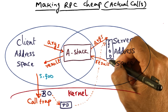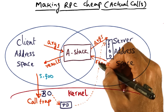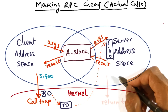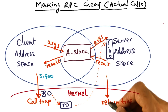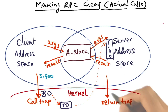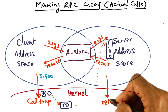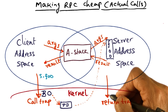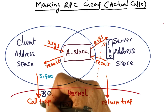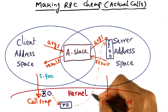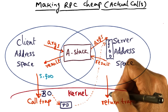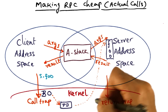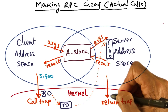Once the server stub has copied the results into the A stack, it can trap into the kernel. This is the vehicle by which the kernel can transfer control back to the client — it does a return trap. When this return trap happens, there is no need for the kernel to validate this trap, as opposed to the call trap, because the up call was made by the kernel in the very first place. Therefore, it is expecting this return trap to happen, and so the kernel doesn't have to do any special validation for this.